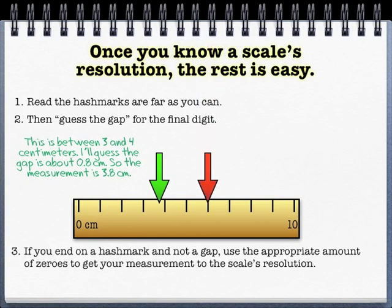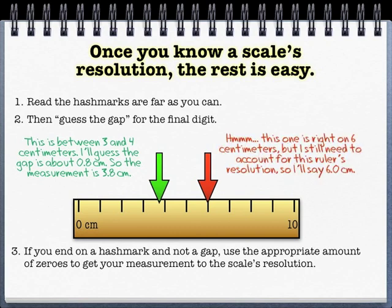If you land on one of the lines, it's a little trickier, but not so much if you've already figured out the resolution. In this case, it's right on the line, so I just need to fill that space up with zeros until I get to the right resolution. It's 6 point something, and in this case, it's 6.0. So again, figure out that resolution and you're not going to really be stumped when you run into situations like this.